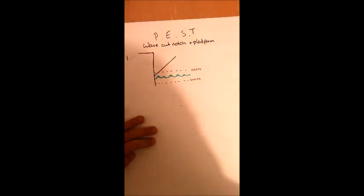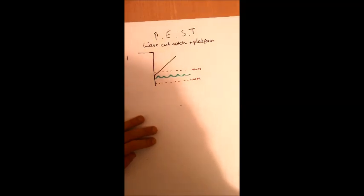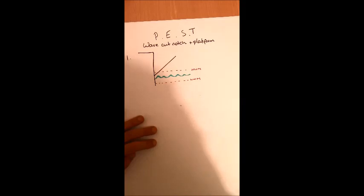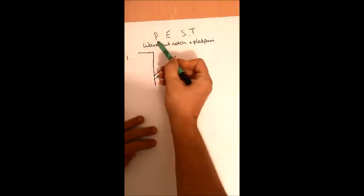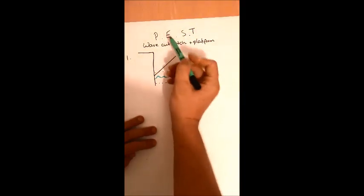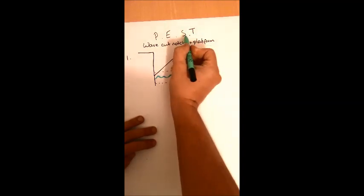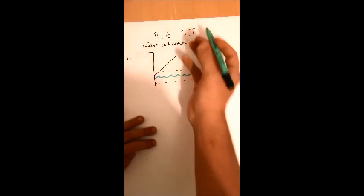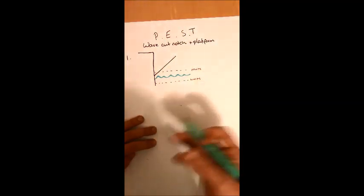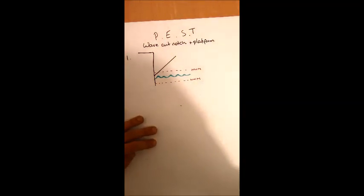We're going to look at how a wave cut notch and platform, like the one we just saw in the photo, can be created. We're going to keep using the PEST structure: processes, explanation, sequence of how it's formed, and the terminology that we can use to explain the formation.